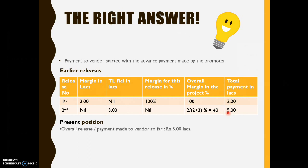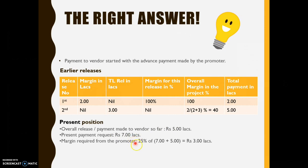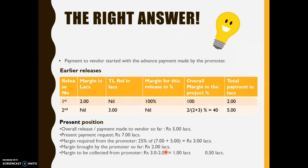Now the present position: overall release made to the vendor so far is 5 lakhs. Present payment request is 7 lakhs. Margin required from the promoter is 25% of 7 plus 5 lakhs, which is 3 lakhs. Margin brought by the promoter so far is 2 lakhs. So how much does he need to provide right now? It is 3 minus 2, which is 1 lakh — and not 50,000 only. So this is the right answer.